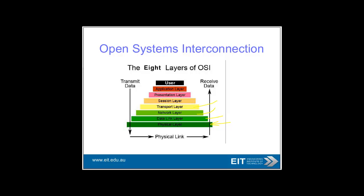The transport layer is really about guaranteed delivery of the package — for example, you have the TCP protocol, which guarantees delivery. The problem is that can create a bit of overhead, so you often use UDP for video. The presentation and session layers I'm not too worried about. The application layer is the other important layer, which is really the HTTP protocol — your web browser and how it interprets data encapsulated in the OSI model.